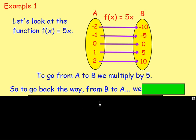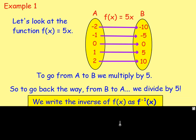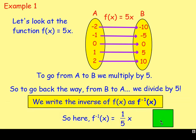You would divide by five — yes, you would divide by five going back the way. So to go from the left to the right you'd multiply by five; the opposite of that would be divide by five. So the inverse would be a fifth of x, we're dividing by five. And the way you write the inverse is f to the negative one of x. This means to go back the way — that's how it is written.